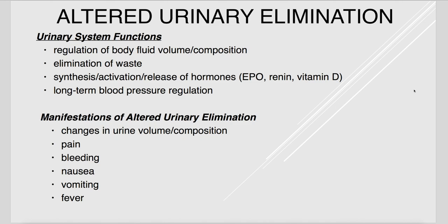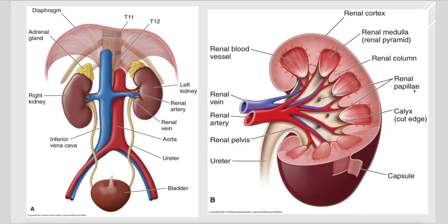Manifestations of changes in urinary function include pain, changes in urine volume or composition, bleeding, nausea, vomiting, and fever in cases of infection. The urinary system consists of two kidneys, two ureters, the urinary bladder, and the urethra. Inside the kidney, renal pyramids compose the renal medulla, while the outer portion — the cortex — is composed of renal columns. At the ends of the renal pyramids are the renal papillae, which drain into minor calyces, then major calyces, then the renal pelvis, and into the ureters.